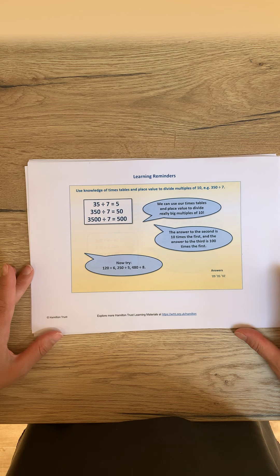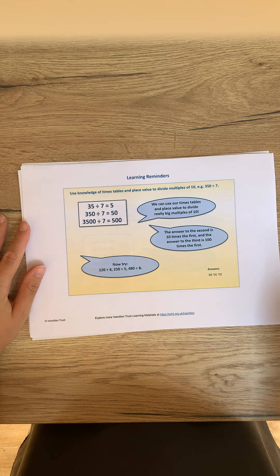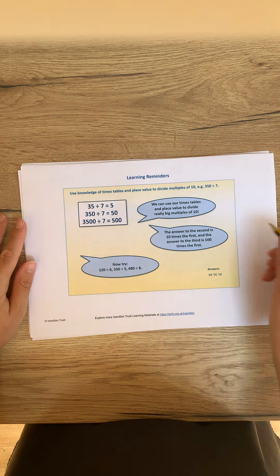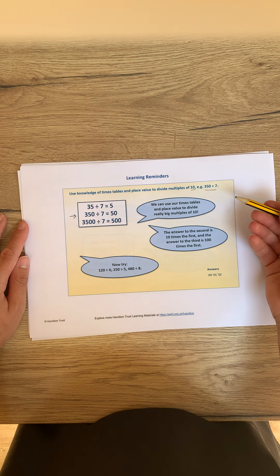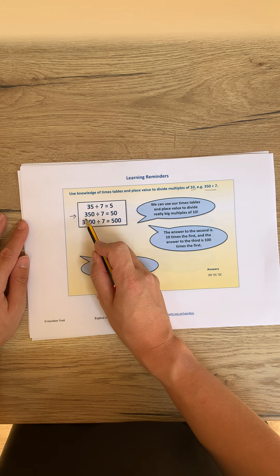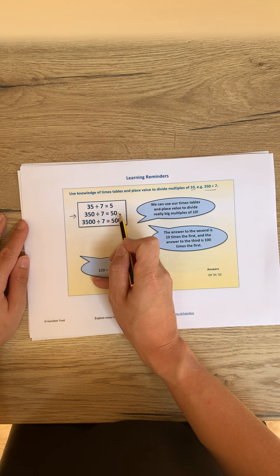The first learning reminder: we are going to look at using knowledge of times tables and place value to divide multiples of 10. Here is an example number sentence: 350 divided by 7. That is the middle number sentence in this sequence. We know that we can use other facts — our knowledge of times tables — to work out the answers of trickier divisions. So, 350 divided by 7 is 50.